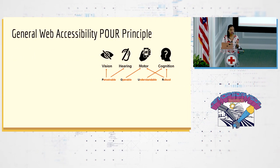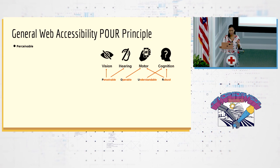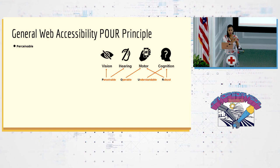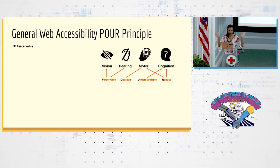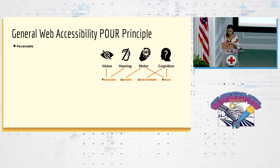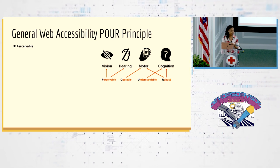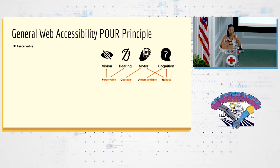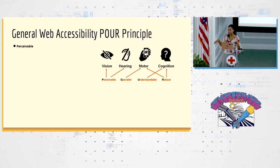The core web accessibility principles are that your web pages should be perceivable — I should be able to see or sense it in some way; operable — I should be able to use it; understandable — I should be able to comprehend it; and robust — it works across all environments and different types of technology.